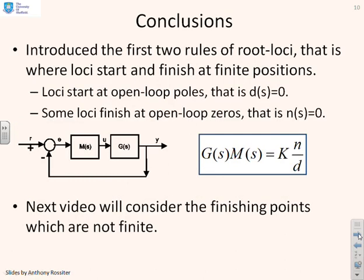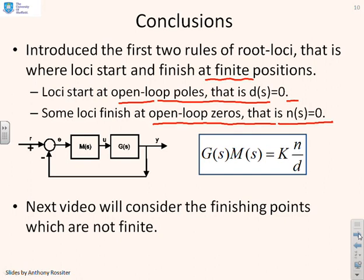In conclusion, we've introduced the first two rules of root loci: where do loci start and finish when those endpoints are finite. The loci start at the open-loop poles, given by D(s) = 0, and some loci finish at the open-loop zeros, given by N(s) = 0. Note the key word 'some' — you will have more closed-loop poles than open-loop zeros. The next video will look at the finishing points which are not finite.